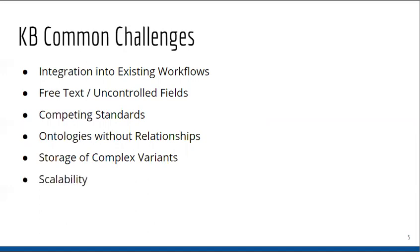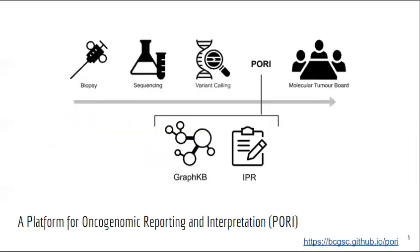These unsolved challenges were the motivation for us to develop our platform for automated genomic reporting and interpretation, also known as CORI. This platform consists of two major components: a graph knowledge base, GraphKB, and a reporting application, Integrated Pipeline Reports, or IPR. Today we will focus on the graph knowledge base aspect.